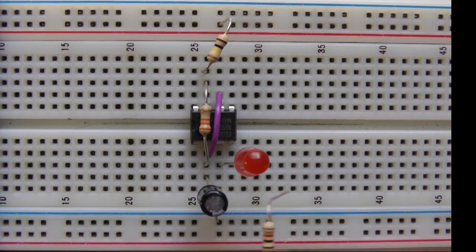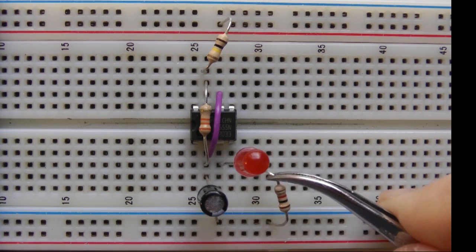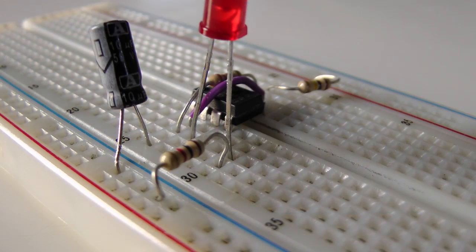To complete the connection, connect R3, a 1000 ohm resistor, from this same unused row to the negative supply line, any hole beside the blue line.